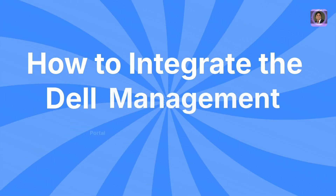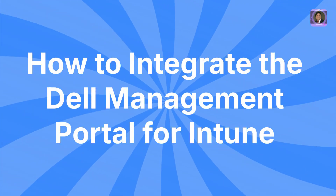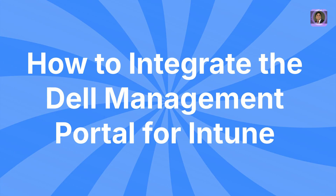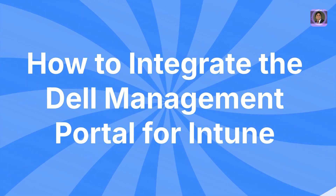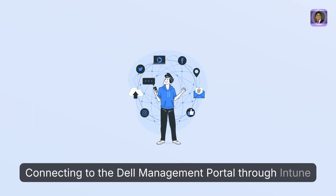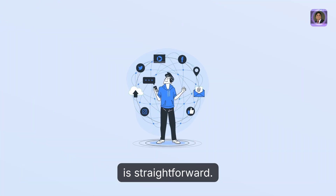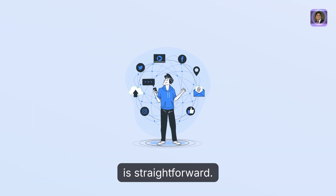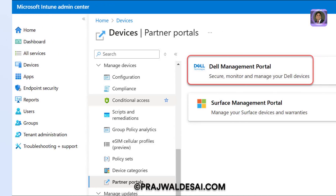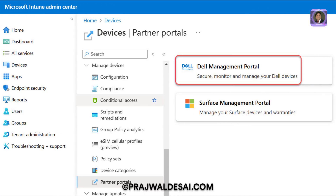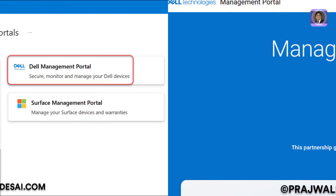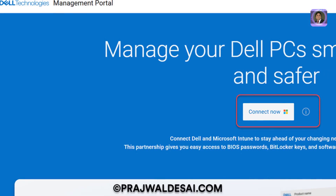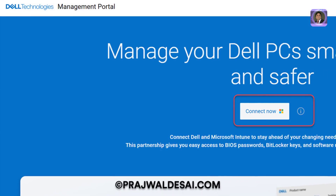How to Integrate the Dell Management Portal for Intune. Connecting to the Dell Management Portal through Intune is straightforward. In the Intune Admin Center, navigate to Devices, then Partner Portals, and select Dell Management Portal. On the Dell Management Portal page, click Connect Now.